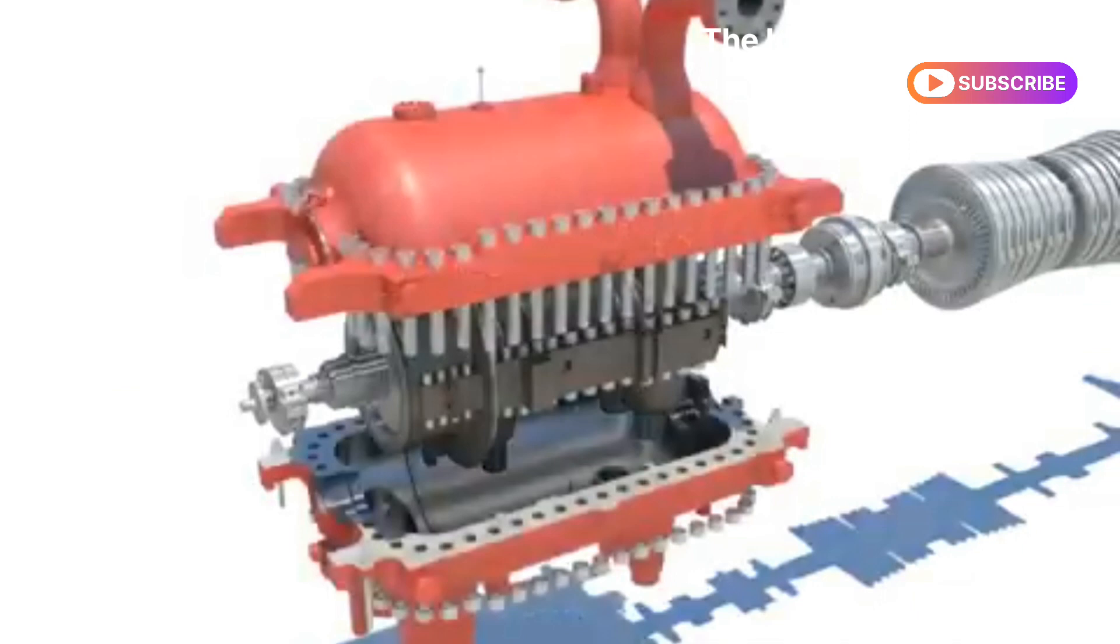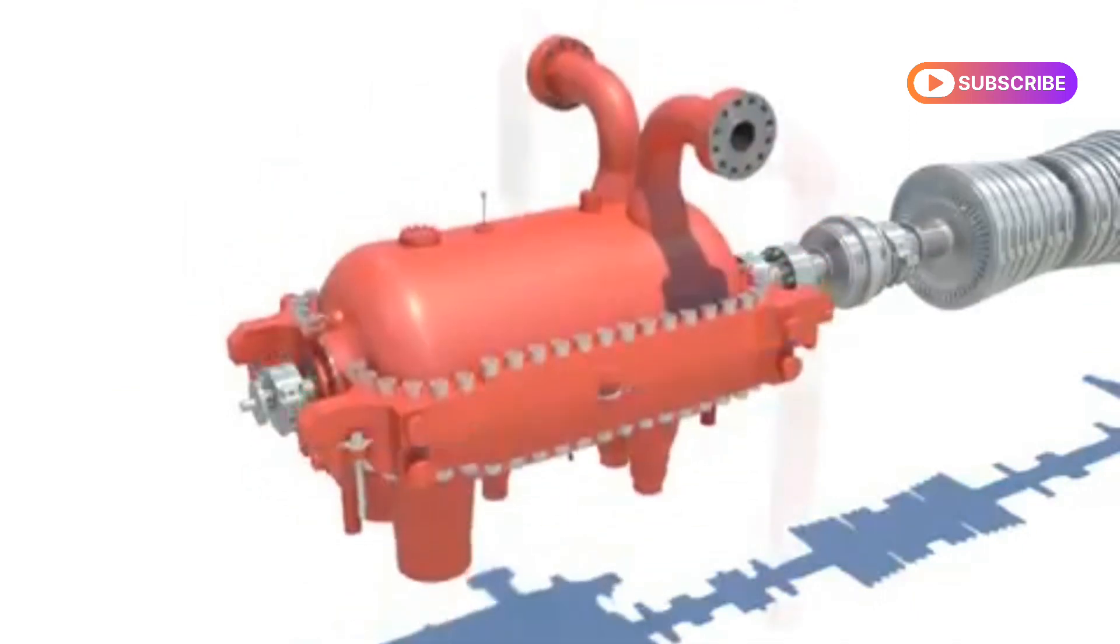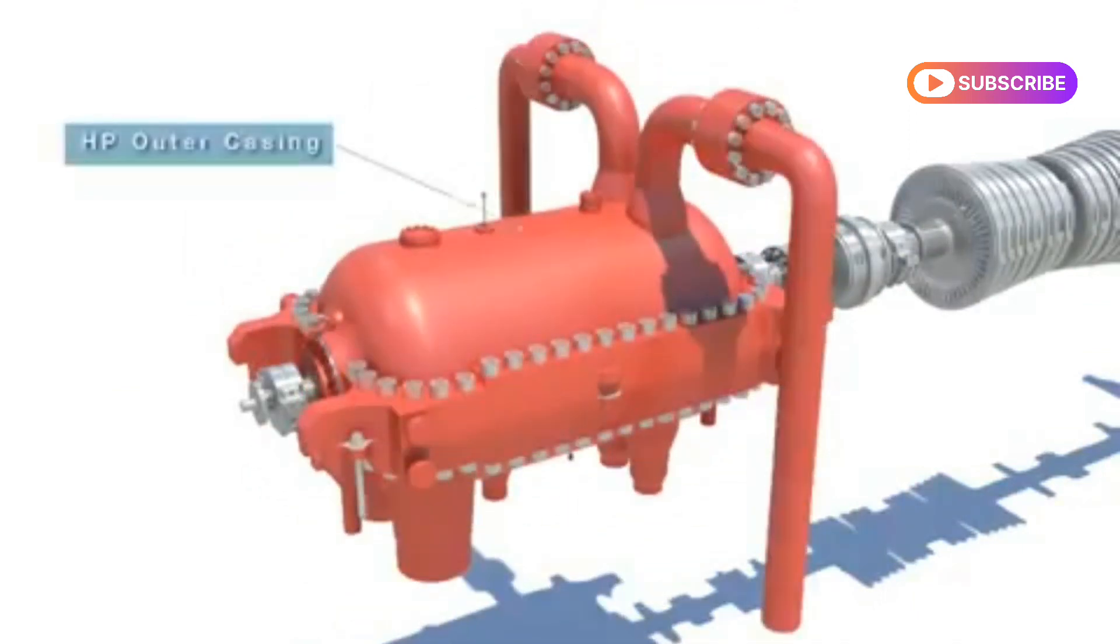The HP outer casing, which is the high pressure turbine external container, blocks the inside and the outside.